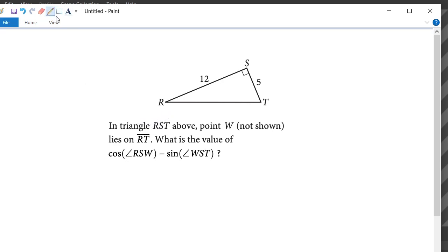So what are we given? We're given a right triangle in which point W lies on RT. So we'll draw here. We can connect our line to point S, or point W.